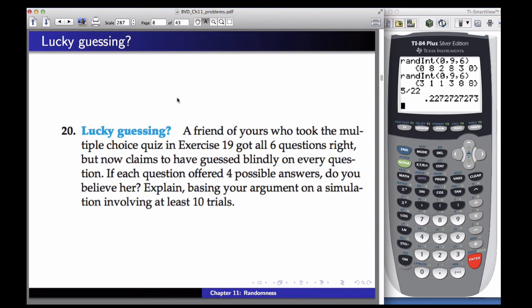Let's look at this other example then. A friend of yours who took the multiple choice quiz we just looked at got all six questions right and now claims to have guessed blindly on every question. If each question offered four possible answers, do you believe her? Explain basing your argument on a simulation involving at least 10 trials. Okay, so here's how this one looks.